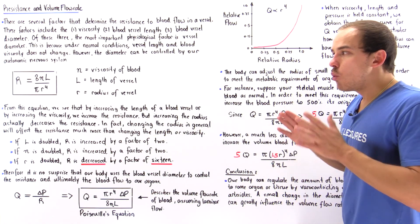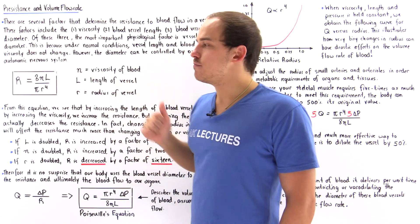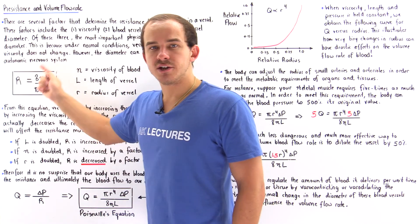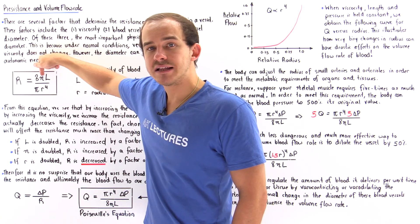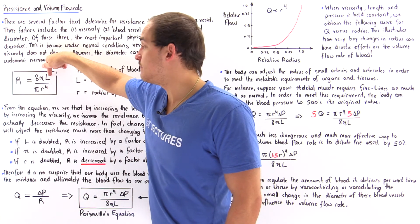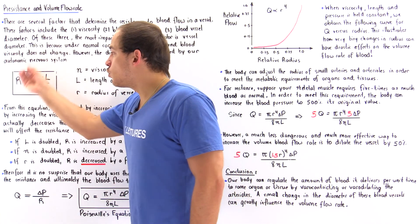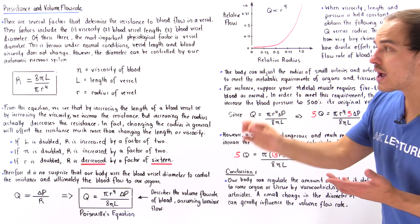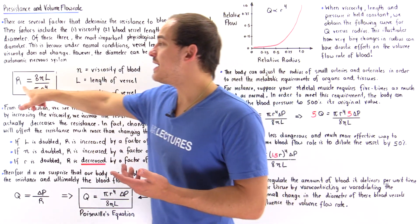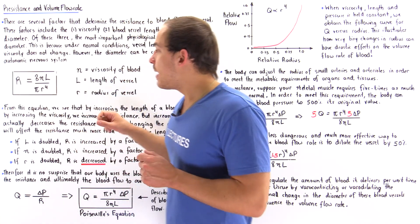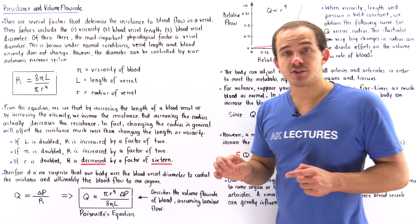What exactly is the relationship between resistance and these three factors? The relationship is given by this equation: our resistance R is equal to 8 multiplied by the viscosity, multiplied by the length of that blood vessel, divided by pi multiplied by r raised to the power of 4. From this equation we see that resistance depends directly on viscosity and on length. So if we increase the length or increase our viscosity, we increase the resistance of our blood vessel.